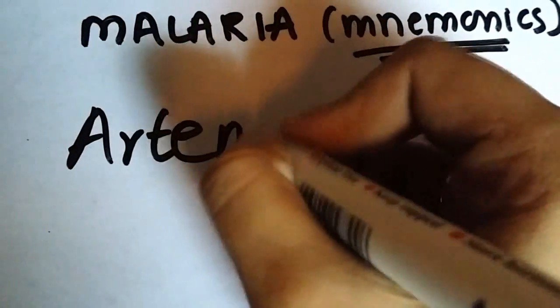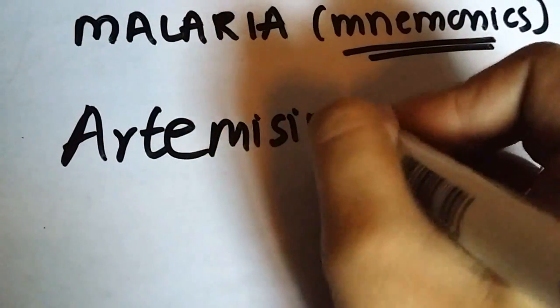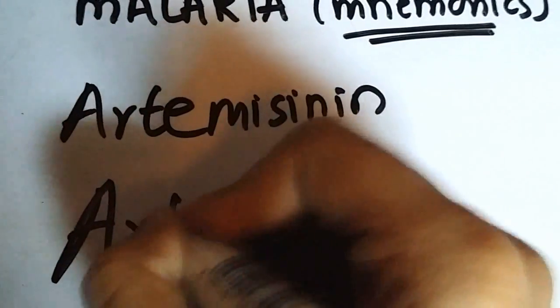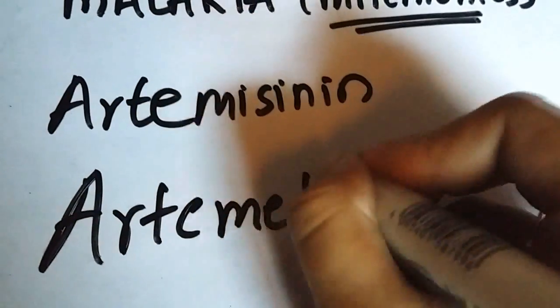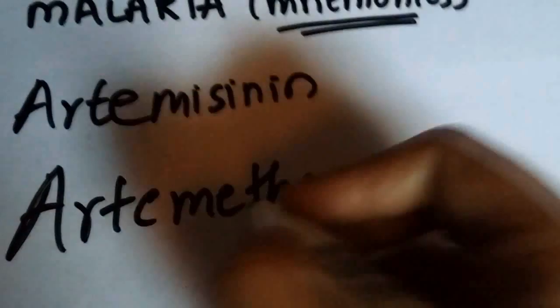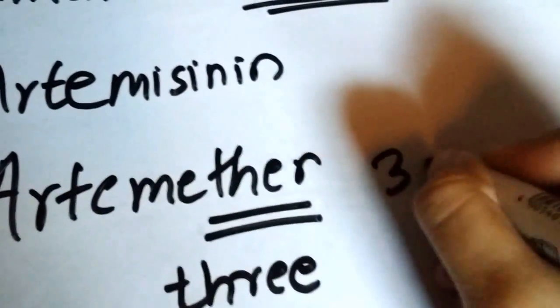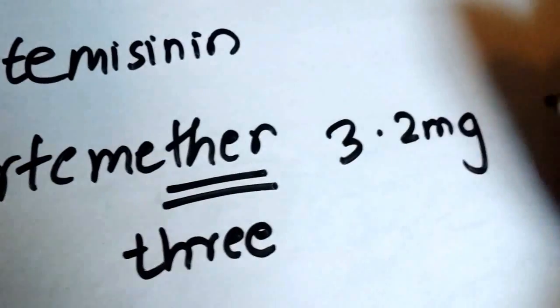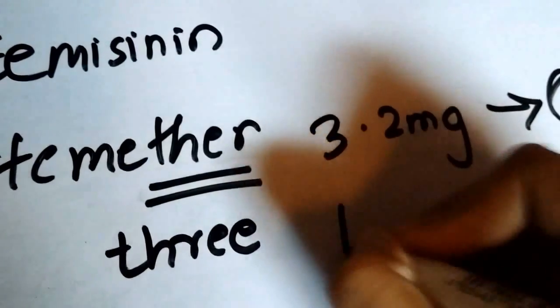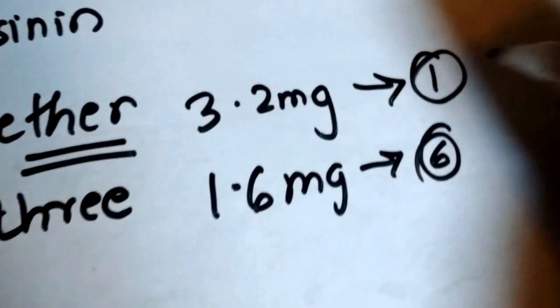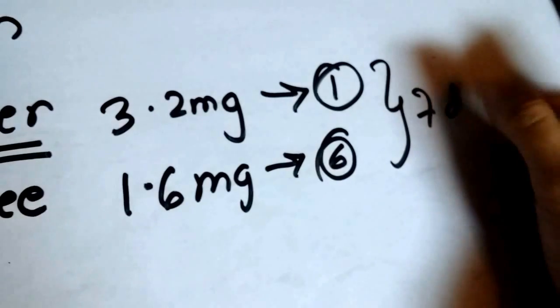The other drugs you use are the artemisinin derivatives. I have a mnemonic for remembering the dose of artemisinin derivatives. You can give artimeter. Artimeter kind of ends in THER which reminds me of 3, so I remember 3.2 milligrams on the first day. Then you continue half the dose, that is 1.6 milligrams for 6 days. The regimen is for 7 days.